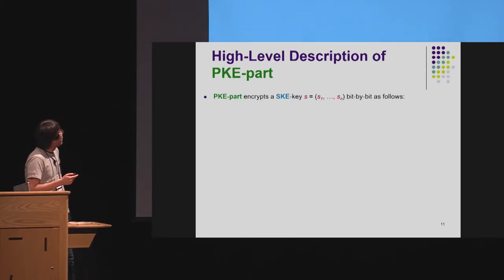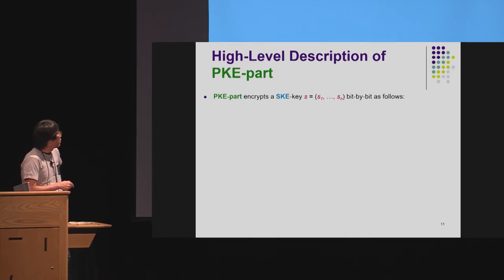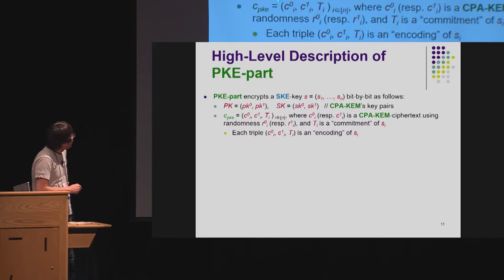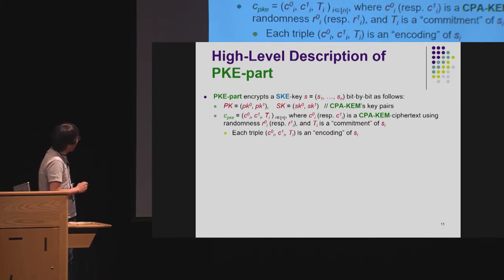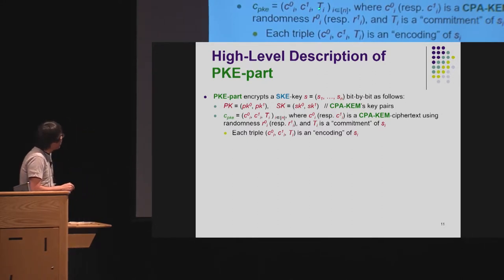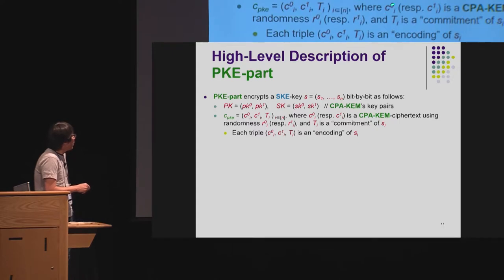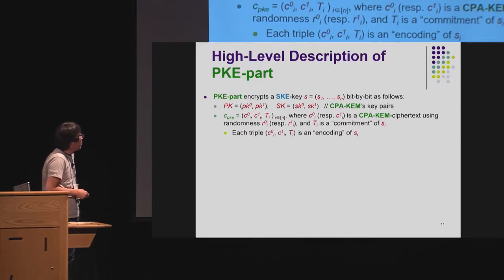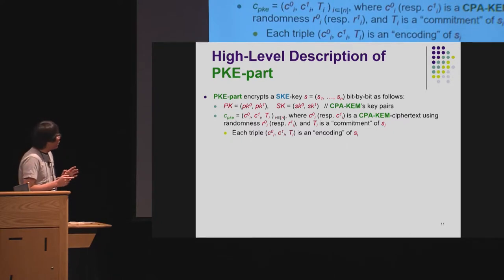The PKE part basically encrypts SKE key S in a bit-by-bit fashion. Its public key consists of two key pairs and its secret key consists of two key pairs, where these are CPA-secure KEM key pairs. The ciphertext of this part consists of n triples, where each triple consists of three values: the first two are ciphertexts of the CPA-secure KEM, where C_{0,i} is encrypted using randomness R_{0,i} and similarly for the other position. The remaining component T_i is a commitment of S_i. Intuitively, this triple is an encoding of bit S_i.